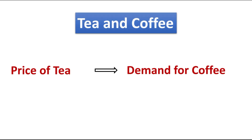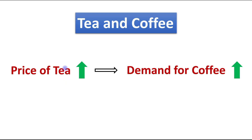We are taking an example of tea and coffee. If the price of tea increases, it will lead to an increase in demand for coffee, because when the price of tea increases it will make tea costlier as compared to coffee, and in this situation people will switch from tea to coffee. That is the reason demand for coffee will be increased.